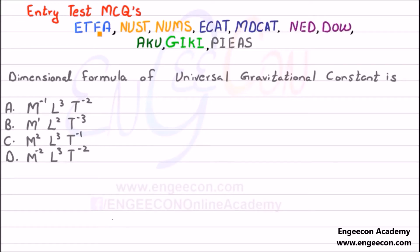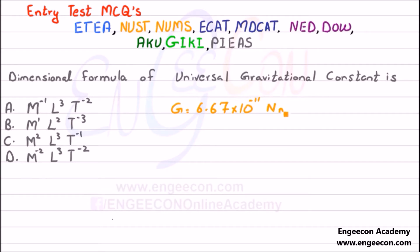Here we have entry test MCQs relevant to entrance examinations. The dimensional formula of the universal gravitational constant is to be found. As we know, the universal gravitational constant G is equal to 6.67 × 10⁻¹¹ Newton·meter² per kilogram². And Newton is equal to kilogram·meter per second².